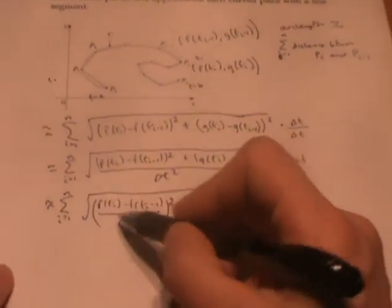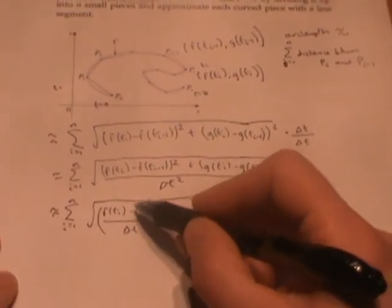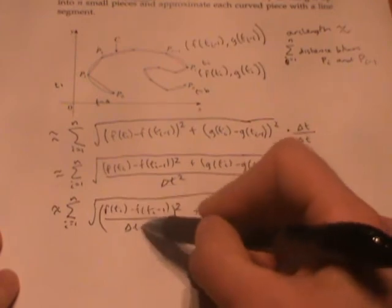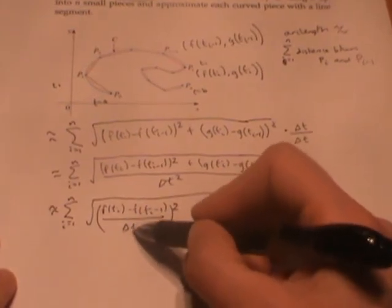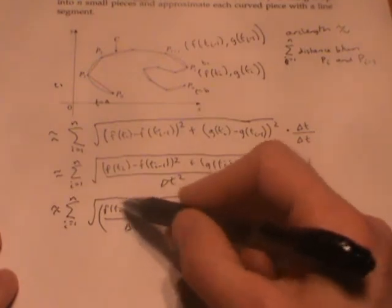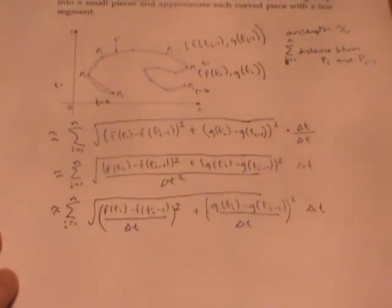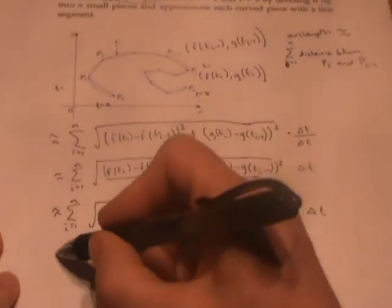This expression should remind you of the slope of a secant line, or an average rate of change. As delta t gets really small, this expression—difference in f over the difference in t—is going to approach the derivative f prime. In fact, by the mean value theorem,